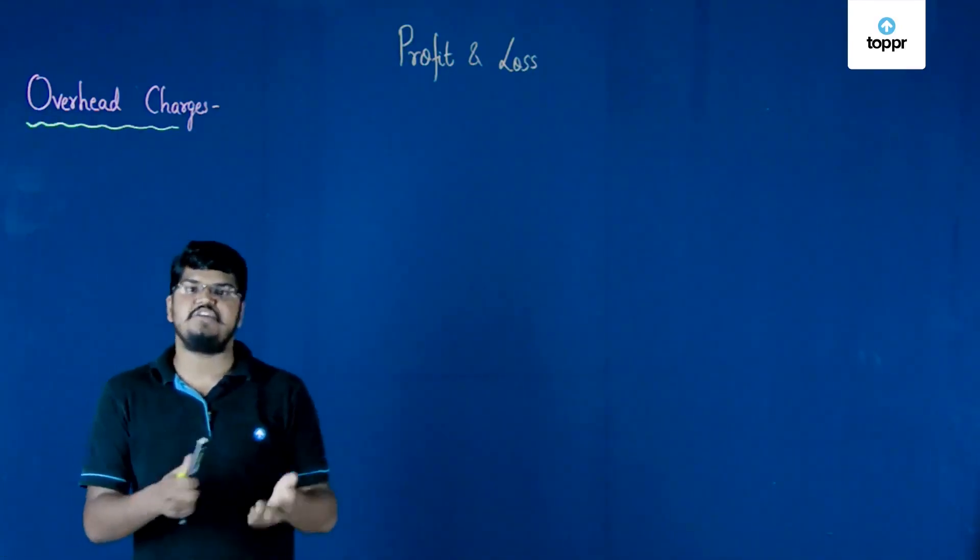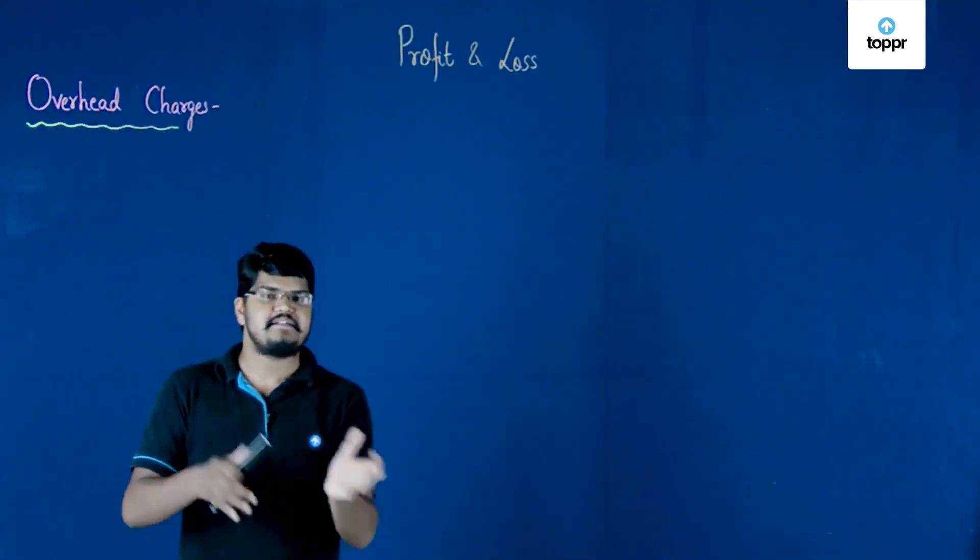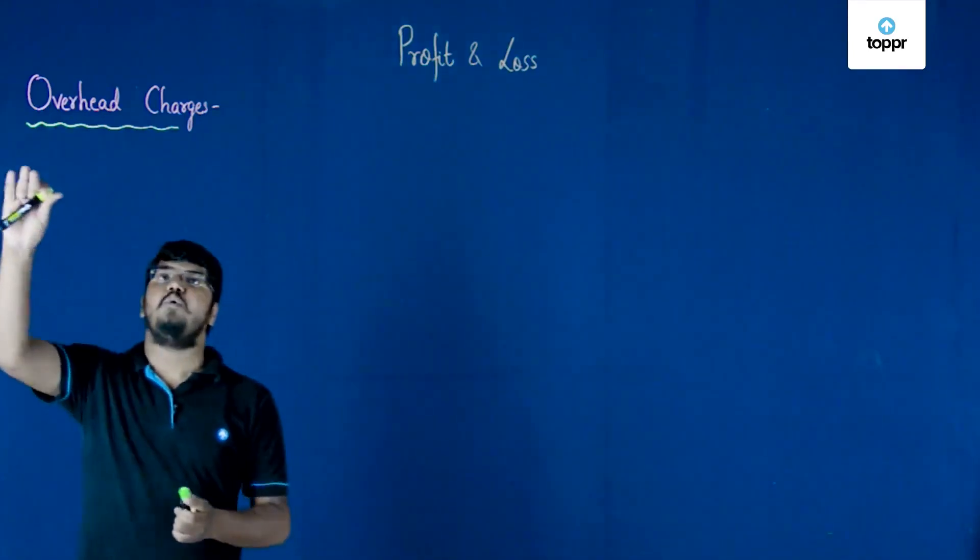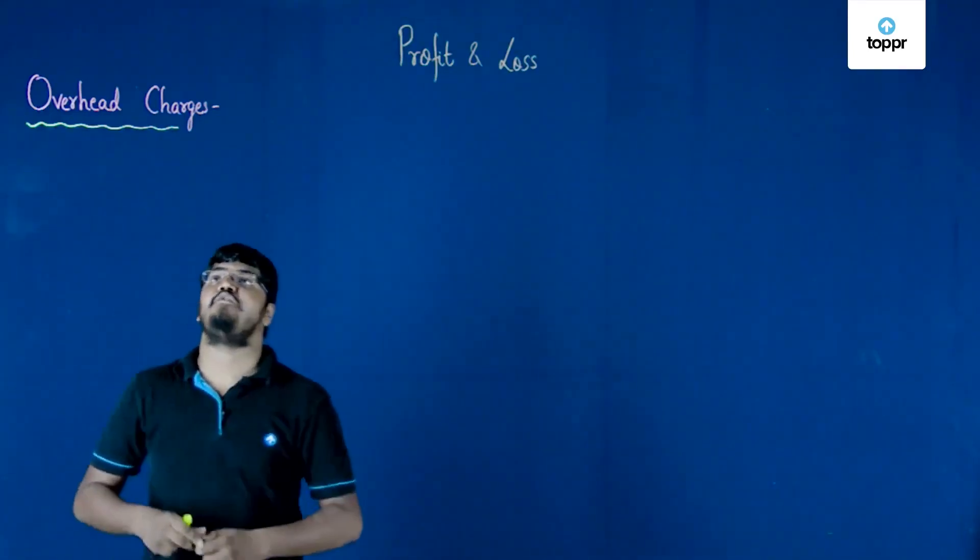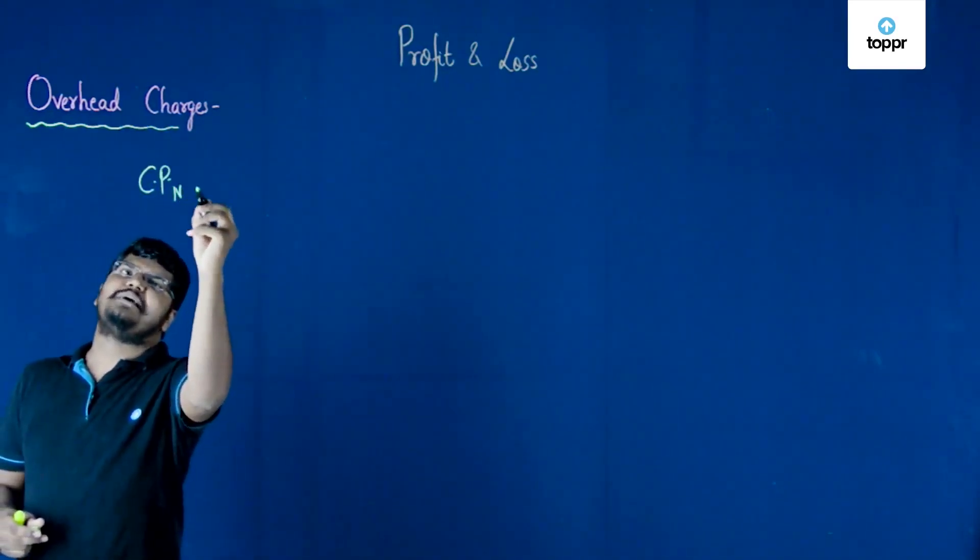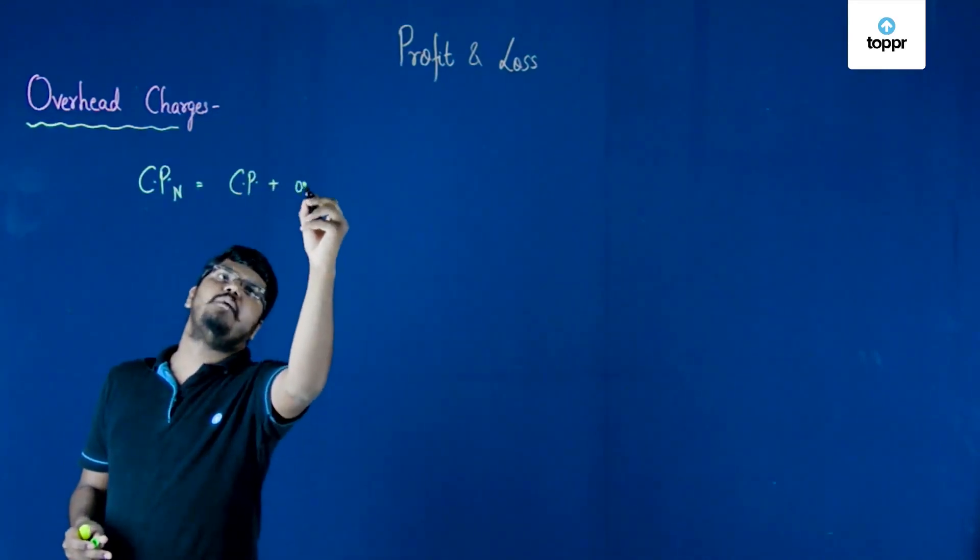So whatever extra you pay for any particular commodity or article, be it in its repair or manufacturing or anything, those are termed as overhead charges. In case of overhead charges, the new cost price is actually equal to the cost price plus the overhead charges.